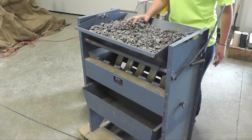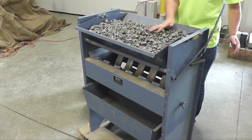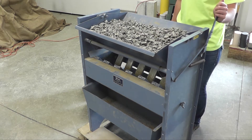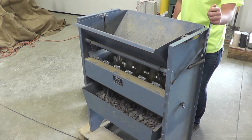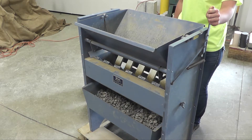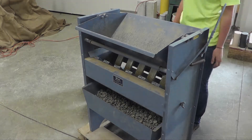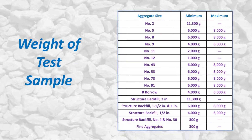Samples should be obtained in the field and reduced to test size in accordance with AASHTO T248. The sample weight of the material is determined by the size of aggregate in the sample. The original sample must be reduced to a test sample size which falls within the minimum and maximum weights in the following table.